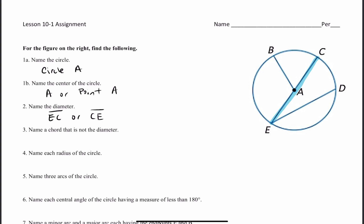Number 3: name a chord that is not the diameter. A chord is a segment where the endpoints are on the circle. This right here is a chord, so I can call this segment ED or segment DE.